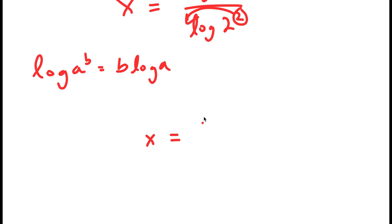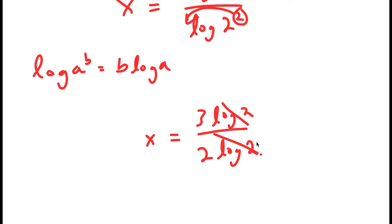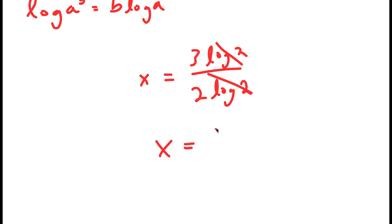So I get x is equal to 3 times log 2 over 2 times log 2. So the log 2's cancel out, and I get x is equal to 3 over 2. So those are two different methods of solving this equation.